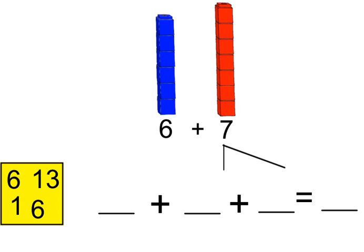Another way you might see a doubles plus one problem is with a picture. This time we have two towers, a blue tower of 6 and a red tower of 7.